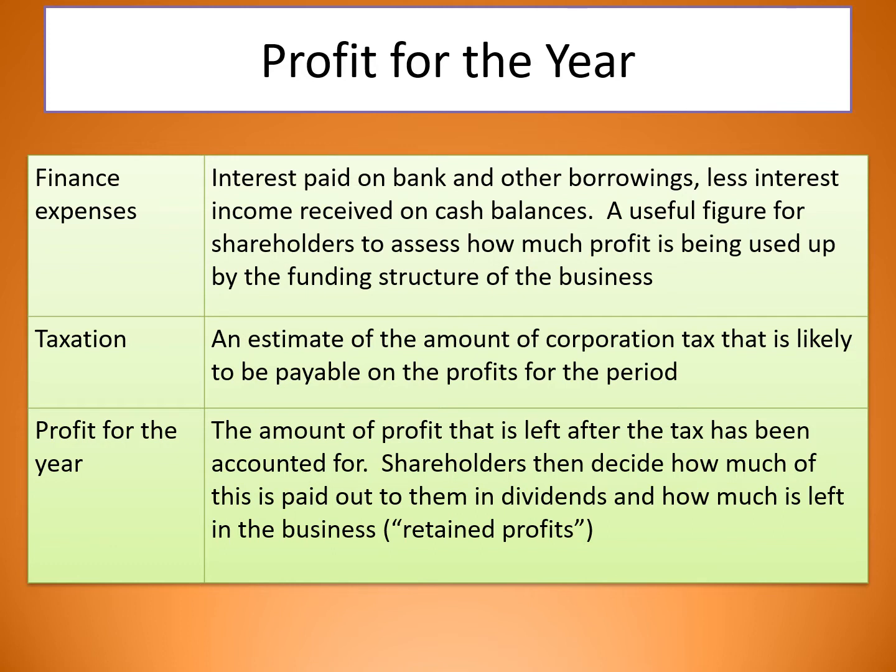Shareholders then decide how much of the profit is paid out to them in dividends and how much is left for the business as retained profit. At the end of the year, shareholders will decide how much they're going to get back. If the business is looking for expansion, they might have a reduced amount of dividends because they know they're going to be investing a lot of money back into the business, which will give them even more in the future.